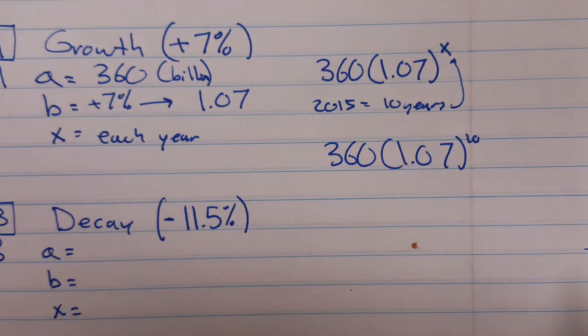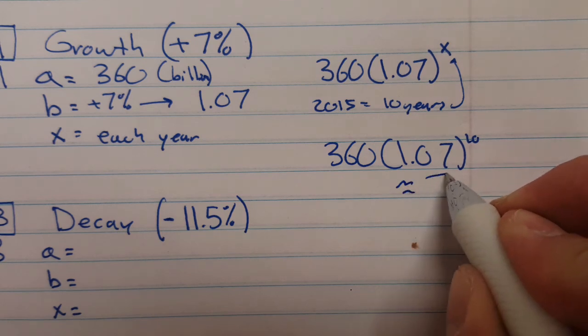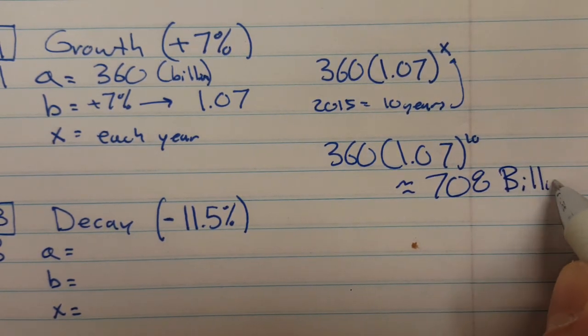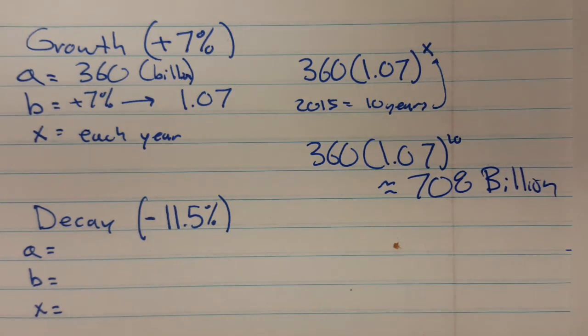So about 708. So I'm going to say about 708 billion dollars. Wow. That's a lot of money, friends. Okay.